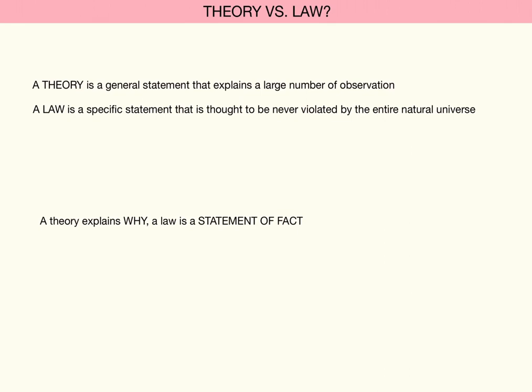To put it another way, a theory attempts to explain why the observations occur. A law is a mere statement of fact. It is a fact that when something falls, gravity will pull it at 9.8 meters per second squared. Exactly as to why two bodies attract one another—that's not exactly known.